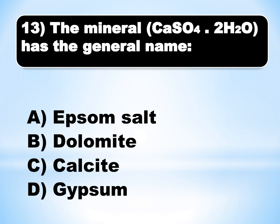MCQ number 12: CaSO₄·2H₂O has a common name — the answer is D (delta): gypsum.